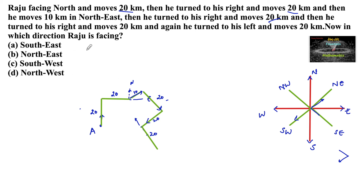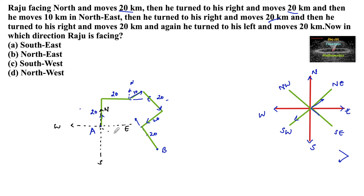Now, in which direction is Raju facing? Let us mark the final position of Raju as B. Considering east, north, west, and south — the final position of Raju is in between south and east, so we can say south-east direction. So the answer is option A: south-east.